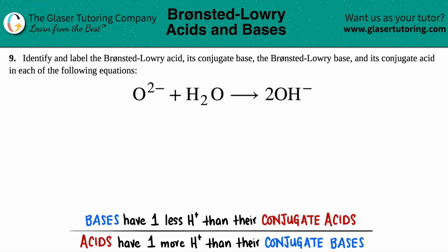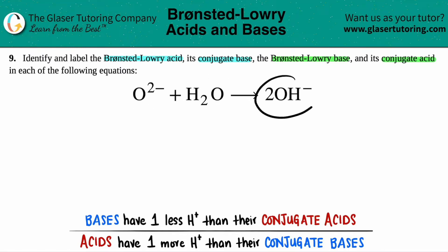Number 9. Identify and label the Brønsted-Lowry acid, its conjugate base, and the Brønsted-Lowry base and its conjugate acid in each of the following equations. And then we have this equation: O2²⁻ plus H2O yields 2OH⁻.